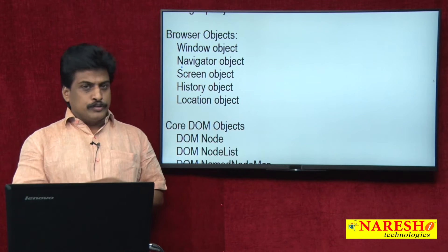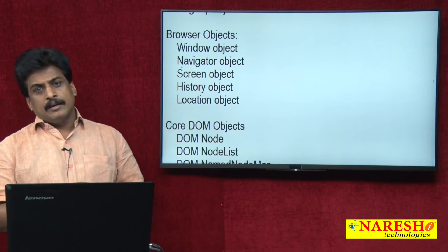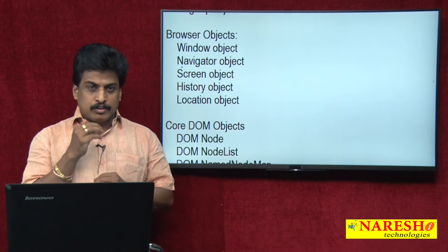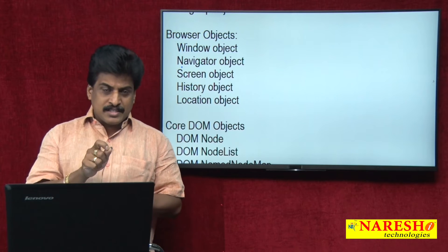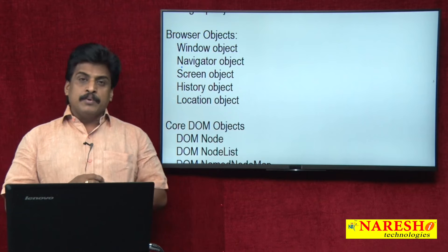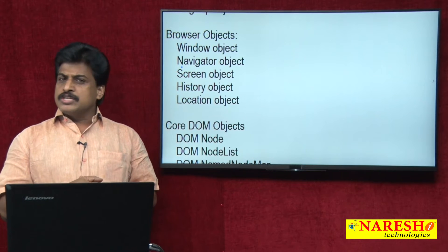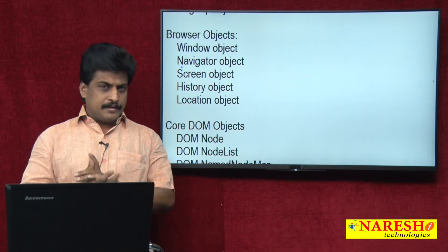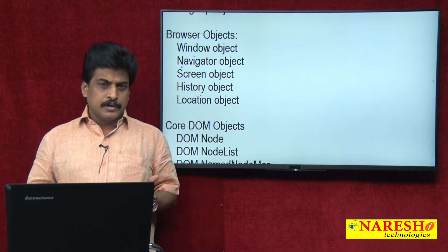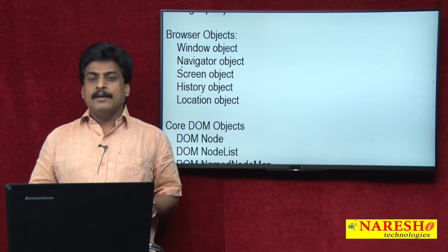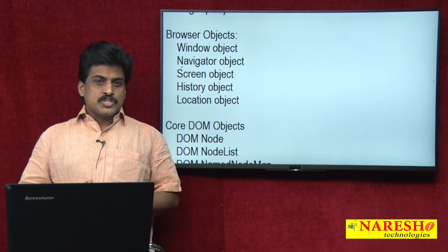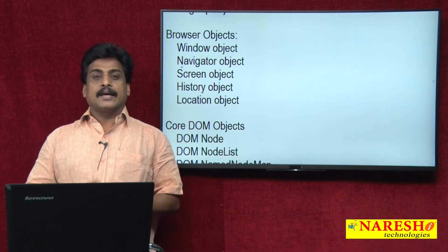Now we can try to view each and every object in detail. We can study internally what properties exist and what methods exist. For example, take the array object. Generally we know array — in other programming languages it is a data type, whereas in JavaScript it is an object. What is an array? A collection of similar data types.